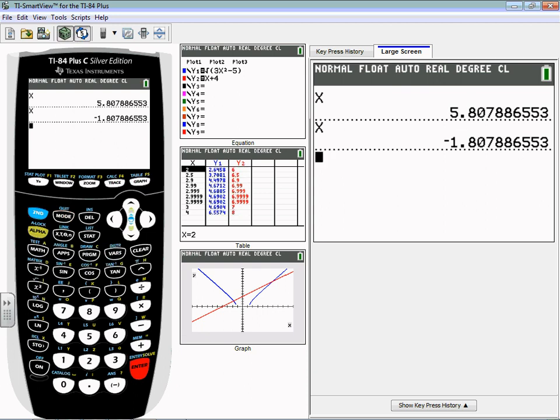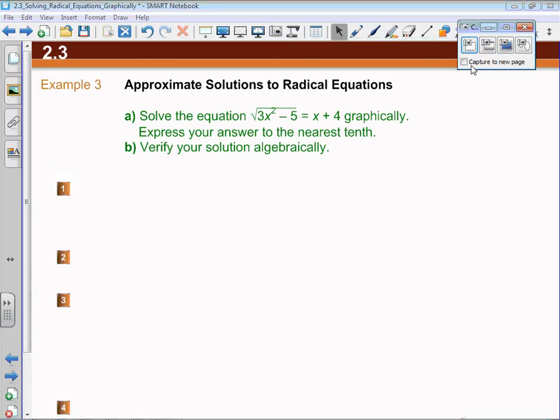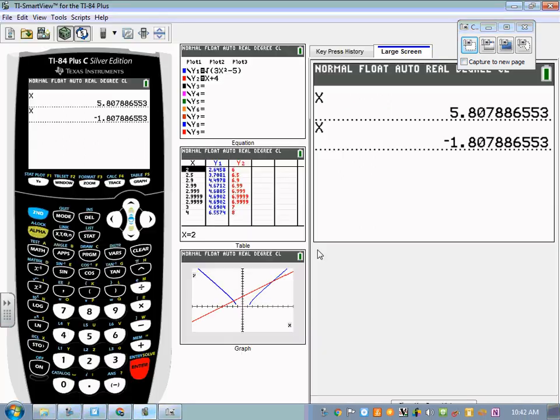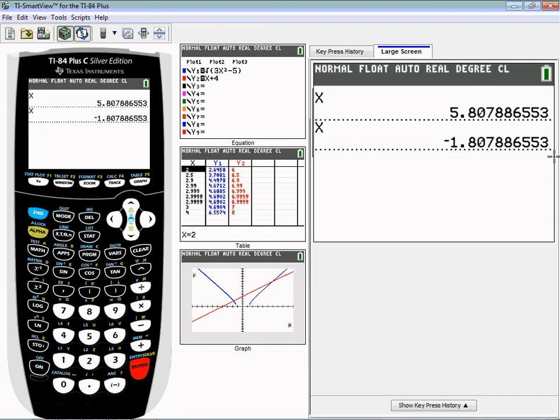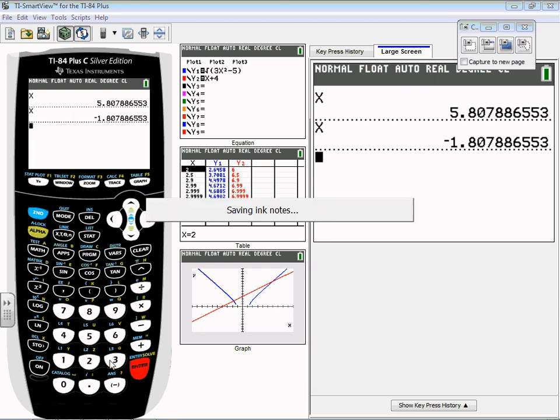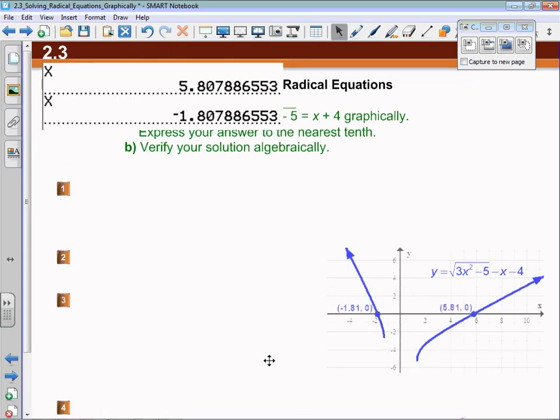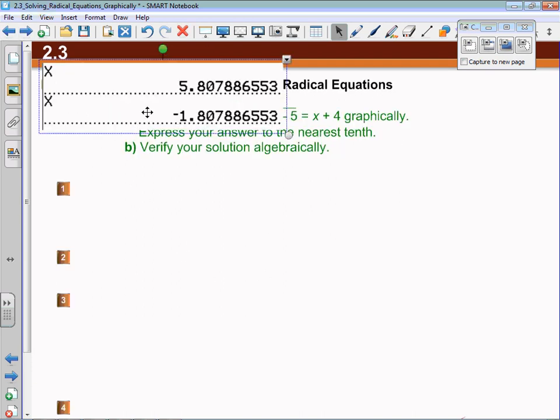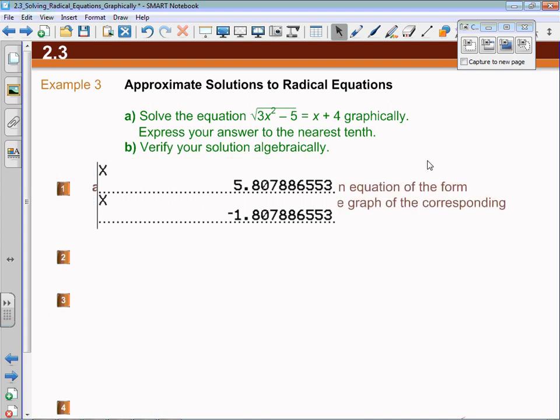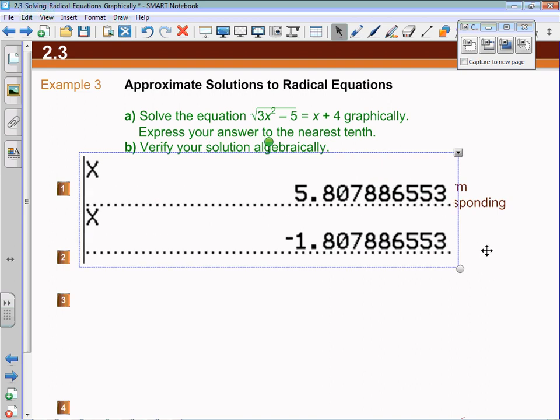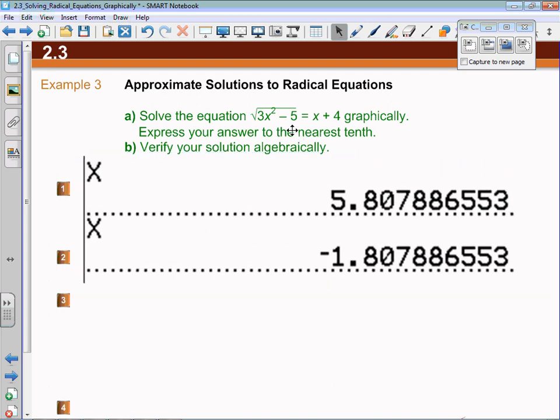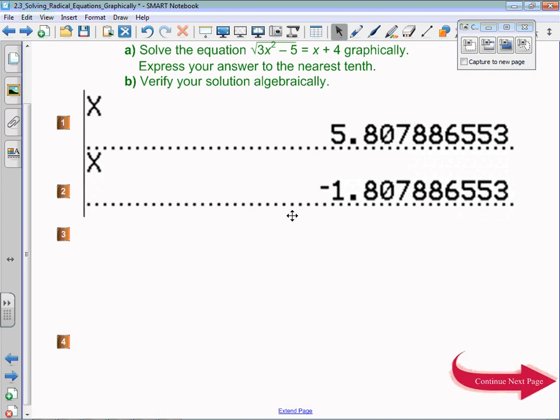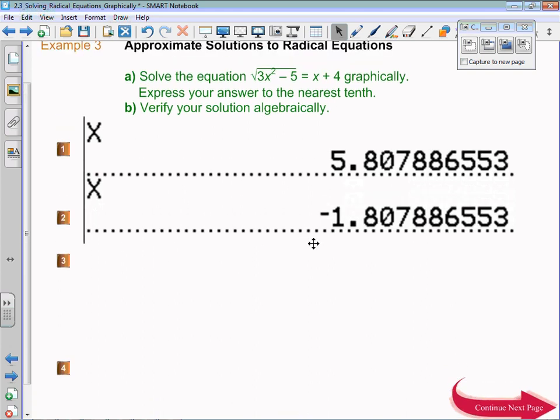Just cheating a little bit here, I am just going to take those values and we're going to put them into the smartboard file and finish the question. So using our graphical technique, which is just to graph the left hand side and the right hand side, what we can do now is with those two solutions—because it says express our answers to the nearest tenth—all we have to do is use a little bit of rounding. So we got two solutions: 5.8 and negative 1.8.